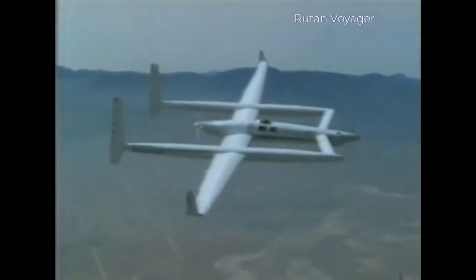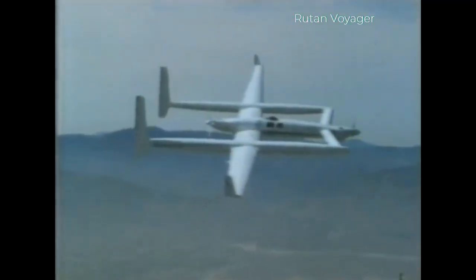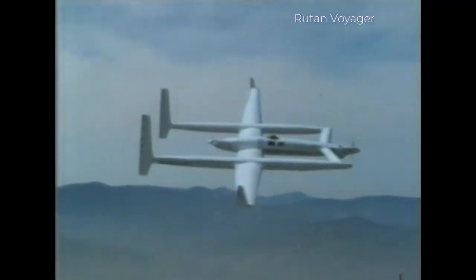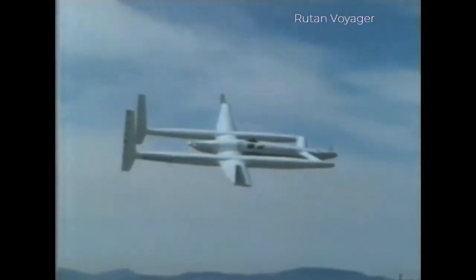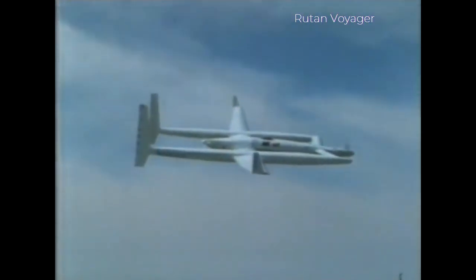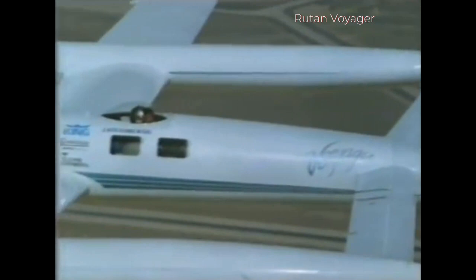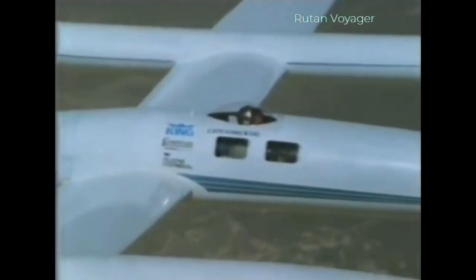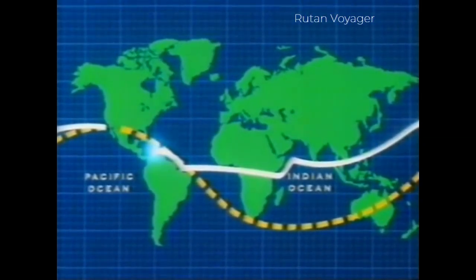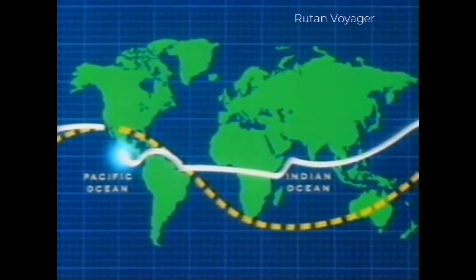An experimental aircraft is an aircraft that has not yet been fully proven in flight. Often, this implies that new aerospace technologies are being tested on the aircraft. Experimental aircraft is also a specific term referring to an aircraft flown with an experimental category airworthiness certificate. A notable example is the Rudin Voyager, the first aircraft to fly around the world without stopping or refueling. The Model 76 Voyager is powered by a piston engine.